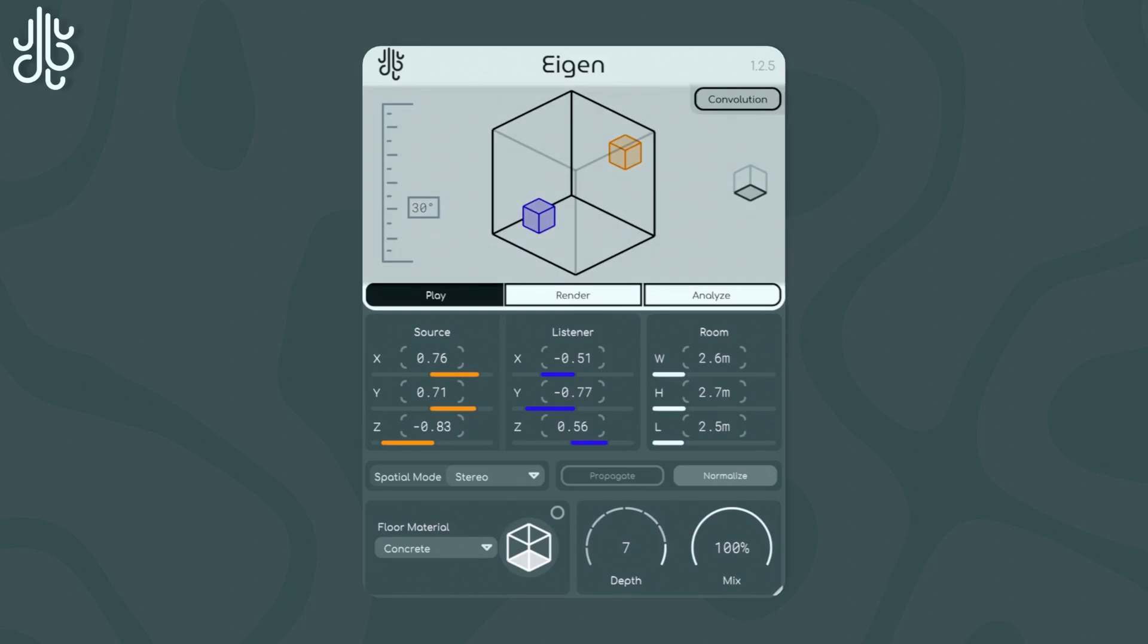The object positioner allows you to move the source and listener objects around in 3D space easily. You can click on either one of them and drag them to move them along whichever plane the dragging is locked to, which can be adjusted by clicking on the cube to the right of the positioner.